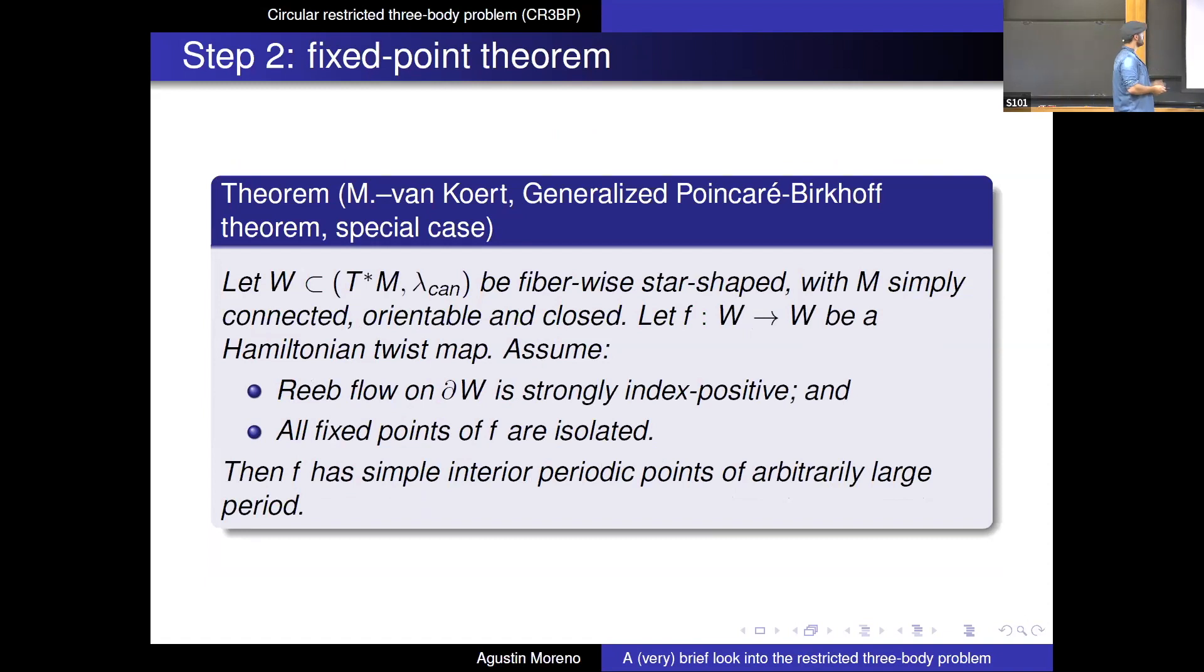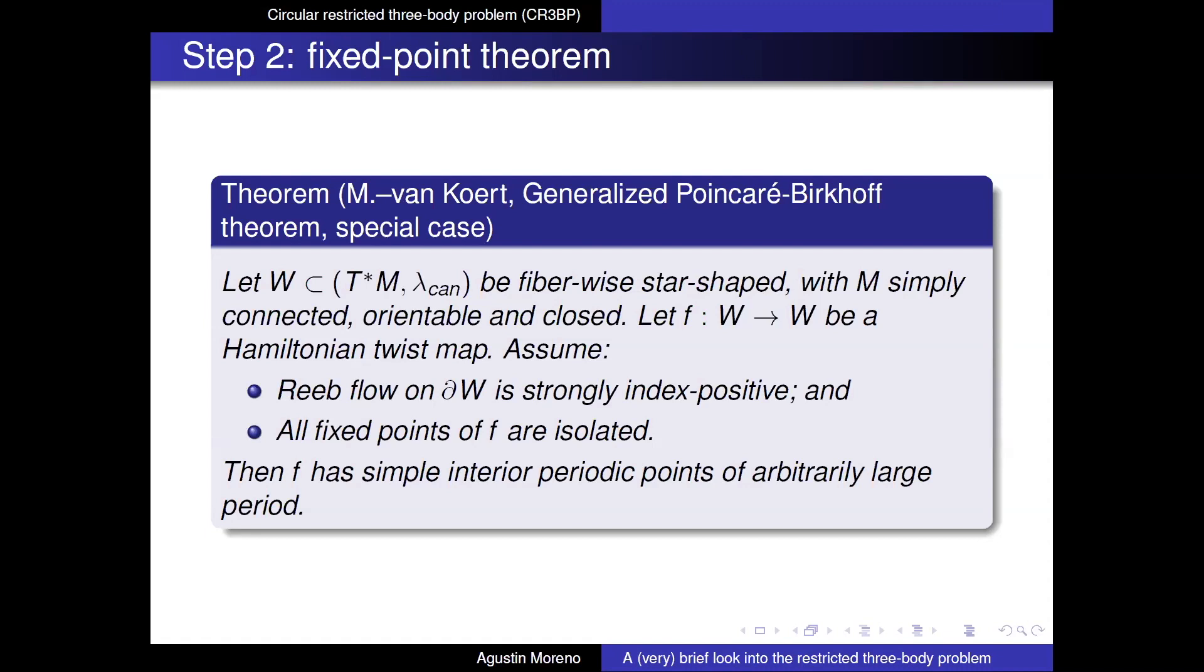So the theorem that I proved with Otto as well in another paper, we're calling this a generalized frontier Brickhoff theorem. This is a special case for more general theorem that we proved, which applies for co-tengent bundles. So now you have a 50-way starship domain and some co-tengent bundles, a manual M with some assumptions. So this is a neural domain. And now you consider a Hamiltonian twist map in the sense that I had found before. So you assume a bunch of things. First one is the technical condition, which I won't tell you about because of time constraints. But the second condition is that all fixed points of F should be isolated. And under this sort of sufficiently mild conditions, then the conclusion is that F should have simple interior periodic orbits of arbitrary large. So this theorem tells you that if you're able to check these conditions, then you will be able to find plenty of orbits.